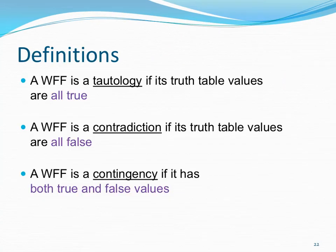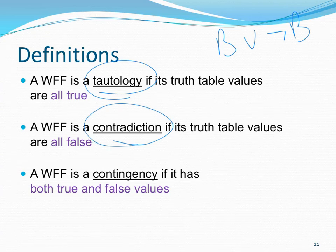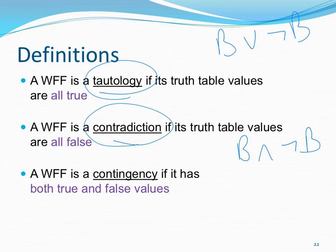Some useful terms: we use 'tautology' to refer to a woof where all truth table values are true — for example, 'B or not B' is a tautology. A woof is a 'contradiction' if all truth table values are false — for example, 'B and not B' always comes out false. And we use the term 'contingency' if it has both true and false values, such as 'B and C.'